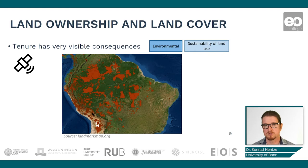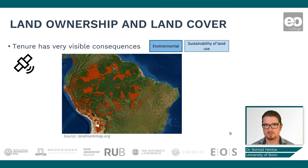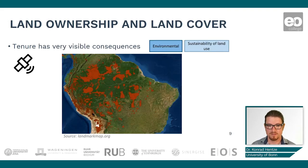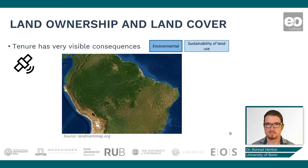I would like to start with the environmental aspect — conservation — where tenure has very visible consequences. You might be well aware of this example: the Amazon and the south of the Amazon rainforest. What you see here in red are community or communal owned lands, or indigenous reserves, drawn from the global database of the organization LANDMARK, where you can view globally indigenous lands. When satellite imagery is overlaid with these, you can see that indigenous land is actually key in preserving the Amazon forest.